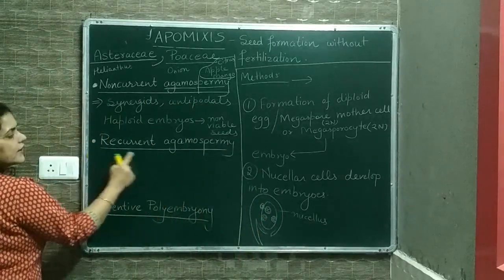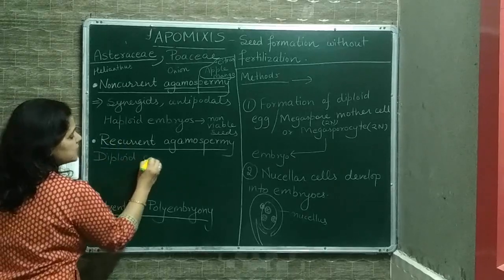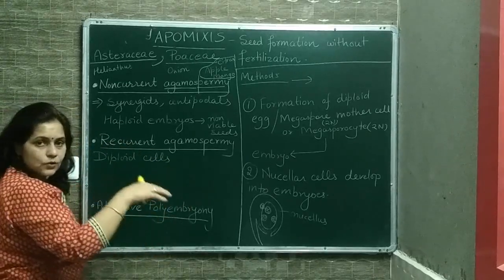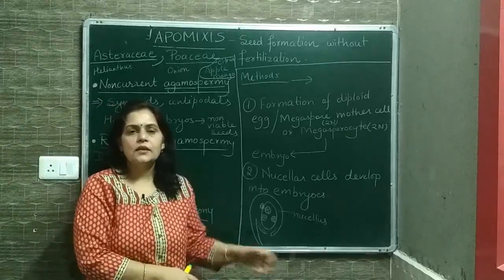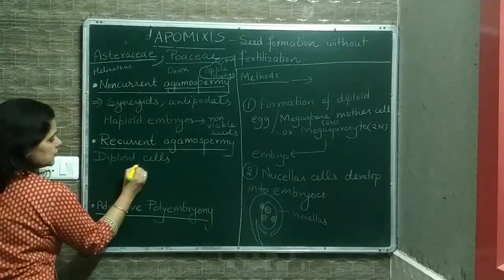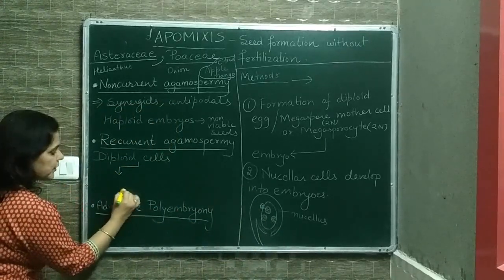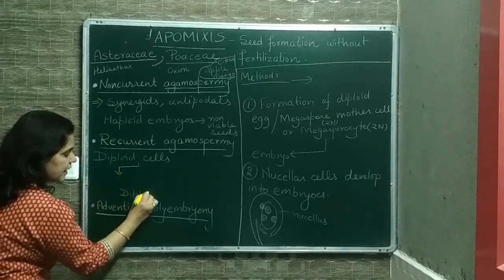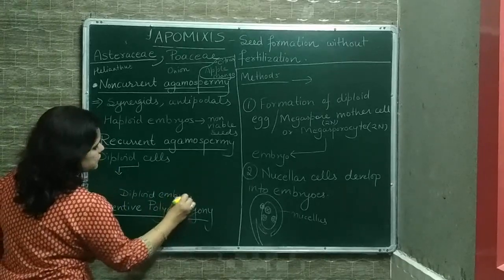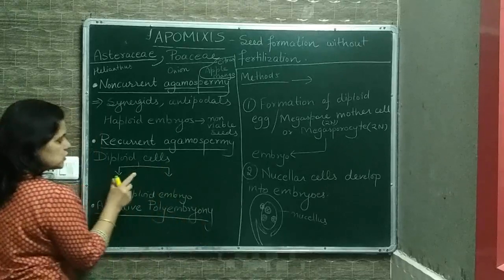Then comes recurrent agamospermy. Here diploid cells form diploid embryos, but that too without formation of any gametes and without fusion of gametes. The result is formation of diploid embryos, and these diploid embryos will form viable seeds. Recurrent agamospermy is of two types.